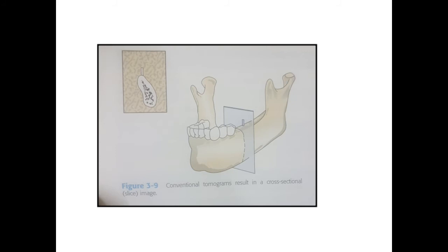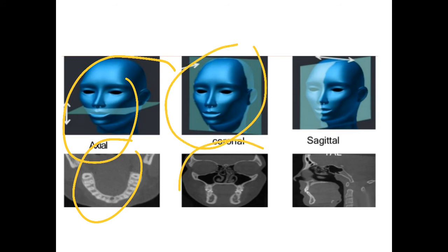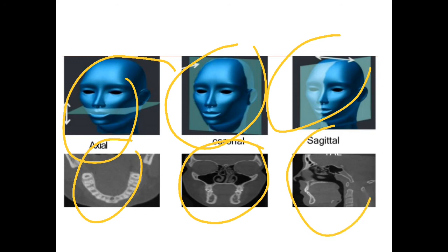Remember the lingual fossa discussed earlier — this axial section shows what you see if you cut the mandible transversely. Avoid placing the implant at a lingual angulation; place it slightly buccally. This slide also shows CBCT sections used in radiographic planning: the axial section, the coronal section, and the sagittal section. All these sections are important to measure bone dimensions — you can check bone width in coronal and axial sections, and in the sagittal section for the anterior region.